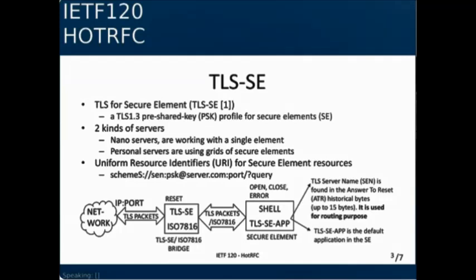We target two kinds of servers: the nano server, which is basically a secure element with a TCP/IP socket, and the personal server, which is based on a grid of secure elements. That means you have a TCP/IP socket that manages a set of, let's say, 32 secure elements. Every secure element is identified by a uniform resource identifier, coming from the fact that we have a TLS server inside each secure element. We use a pre-shared key as a secret, as a root of security, with a secure channel with the secure element.